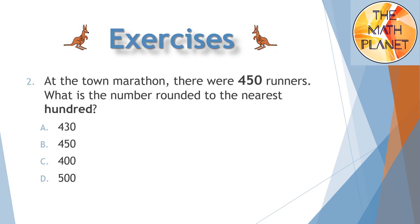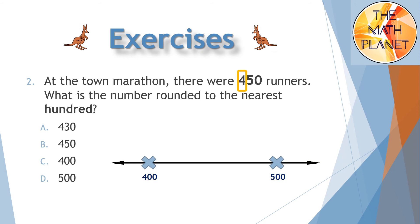Question 2: At the town marathon there were 450 runners. What is the number rounded to the nearest 100? I have 450 runners and I need to round to the nearest hundred, so I will circle the hundreds digit. The lower benchmark will be 400 and the upper benchmark is 500. Since 450 is the halfway number, this means I will round it up to 500. The correct answer is D.